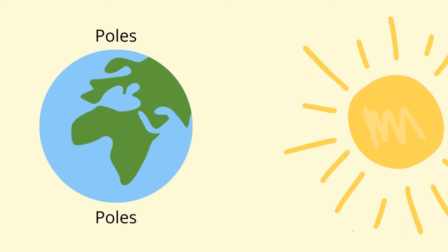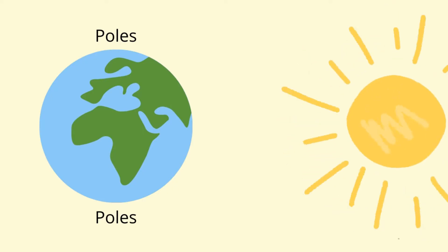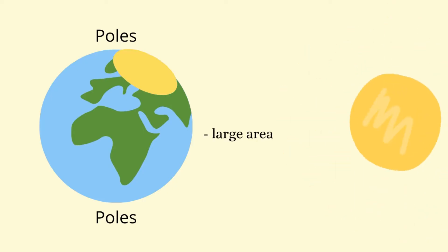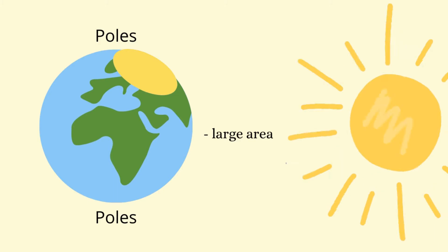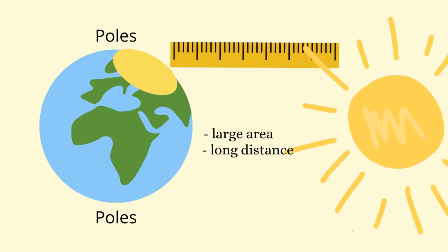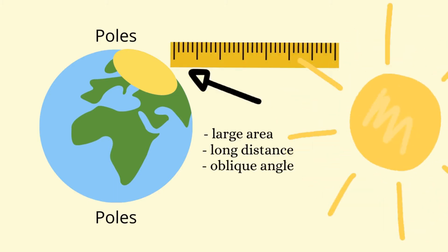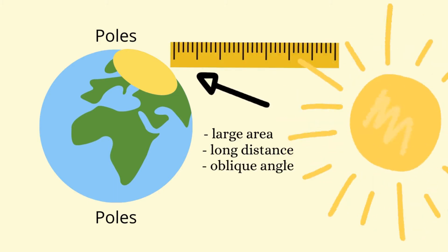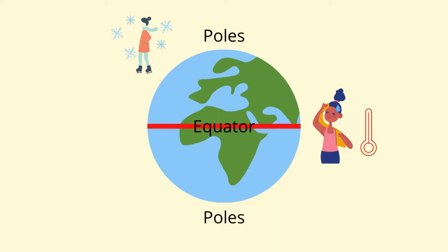Whereas as we move towards the poles, this insolation covers a much larger area, travels a much longer distance, and hits the Earth at an oblique angle. And this is essentially the reason why we have very high temperatures in the equatorial areas and very low temperatures at the poles.